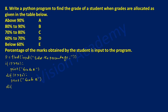Next elif statement. Again check out the percentage — if it is greater than 70, colon. With indentation we write the print statement and here it should display grade C. End the double quotation mark and close the bracket.